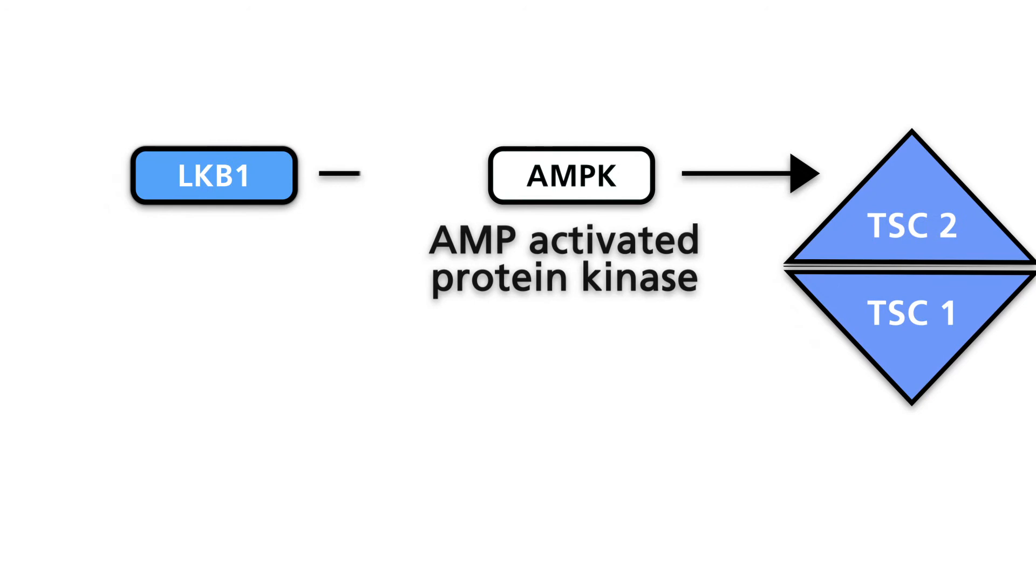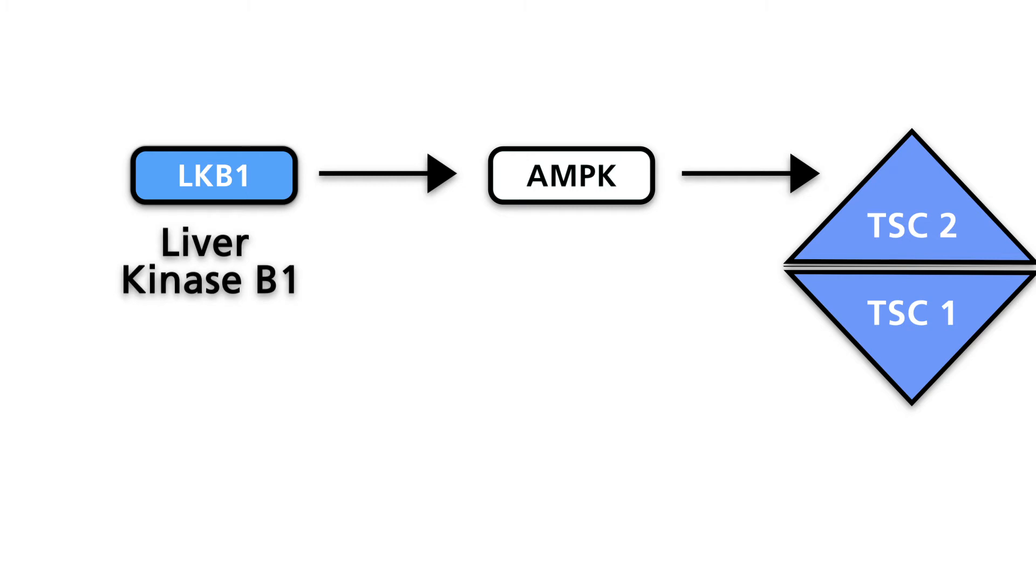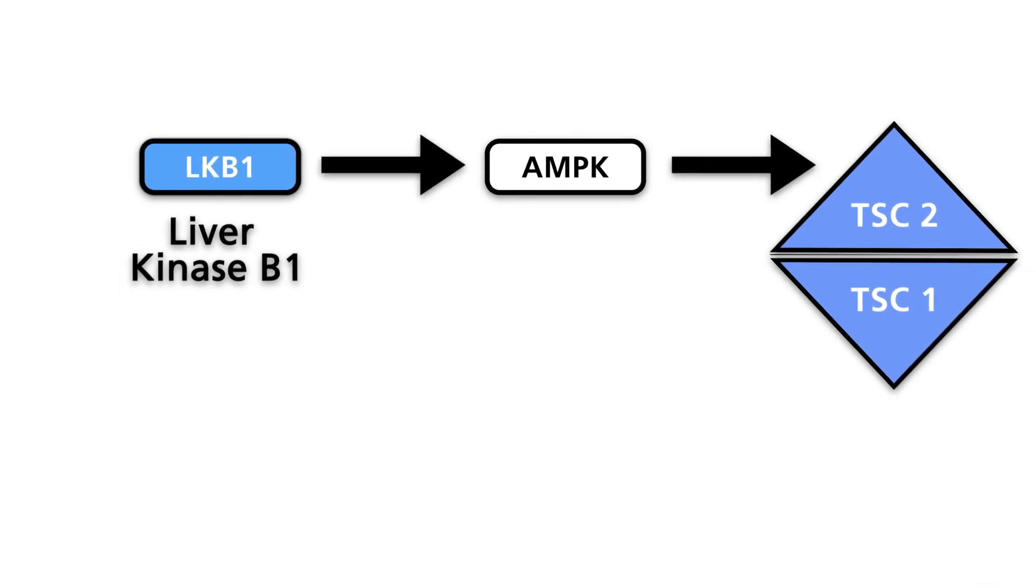AMPK is an important energy-sensing enzyme that monitors cellular energy status. AMPK is activated by what is known as the liver kinase B1, abbreviated LKB1. In response to cellular metabolic stress, the LKB1-AMPK pathway is activated, which inhibits the activity of mTOR complex 1.